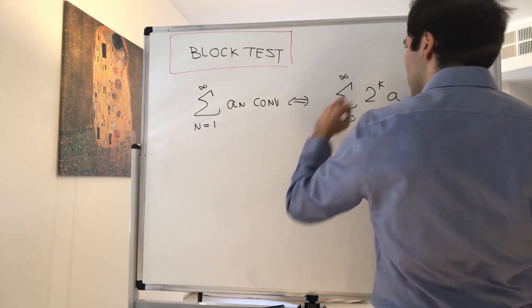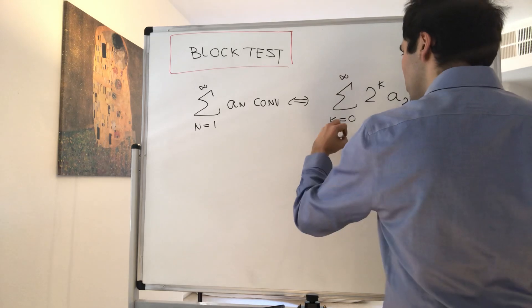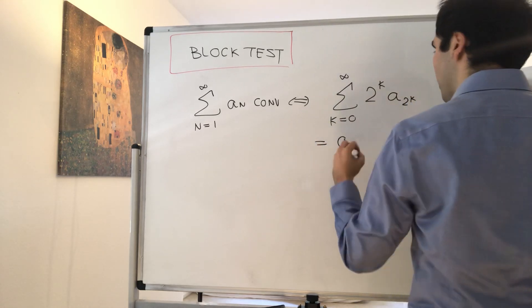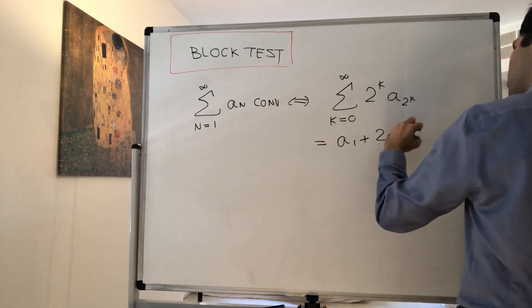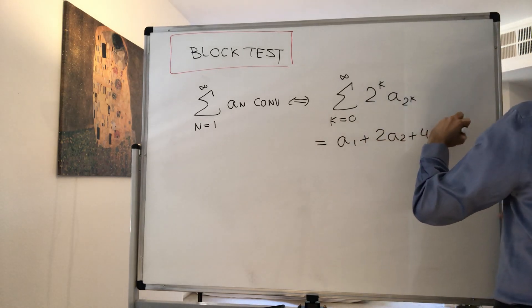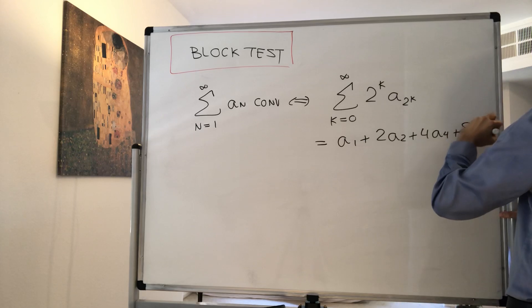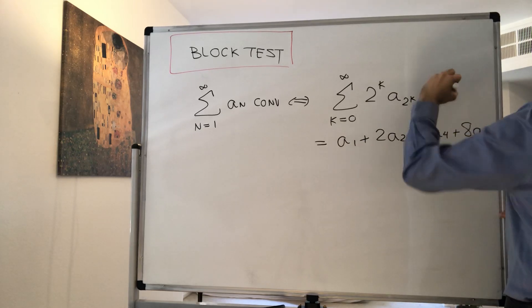Which is just 2^0 times a_(2^0), so just a_1 plus 2a_2 plus 4a_4 plus 8a_8, dot dot dot, converges.